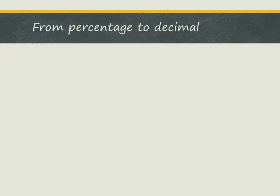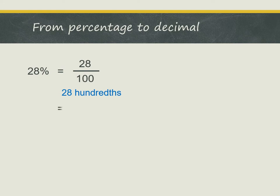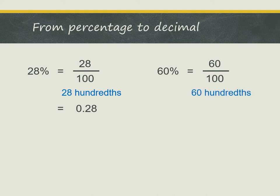Next, let's look at how to convert from a percentage to a decimal. Let's say we have 28%. We can write it as 28 out of 100. This can be expressed as 28 hundredths, so we can write it as the decimal 0.28. Let's look at another example: 60%. We can write it as 60 out of 100, and this can be expressed as 60 hundredths, so we write it as the decimal 0.60, and we remove the 0 at the end to get 0.6.